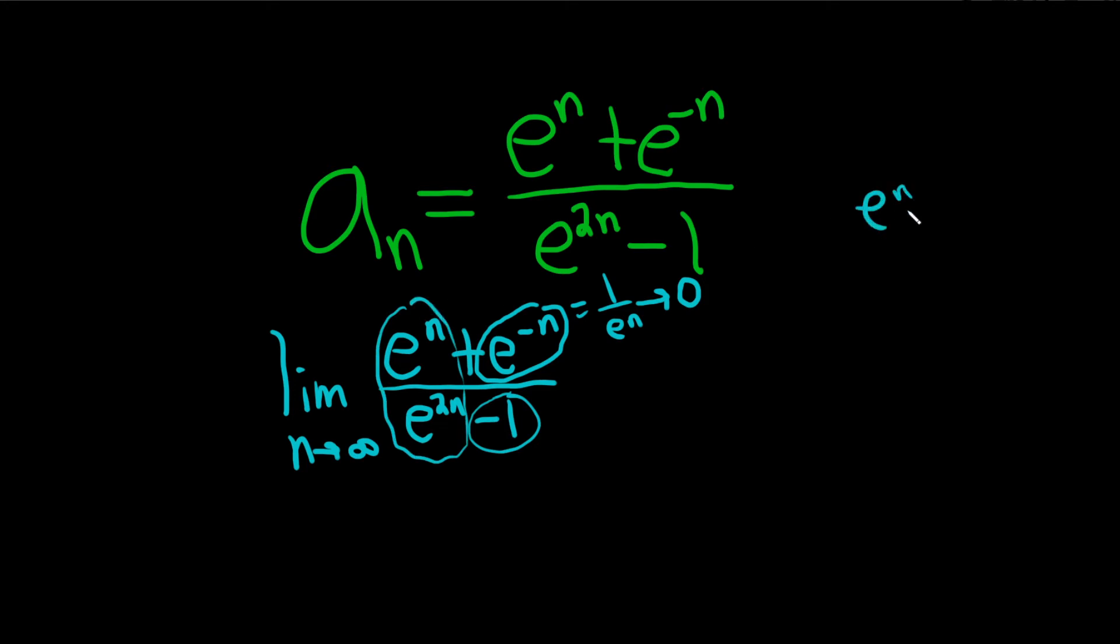So if you look at e to the n over e to the 2n, and you use properties of exponents, what happens? It's e to the n minus 2n, so it's really e to the negative n.